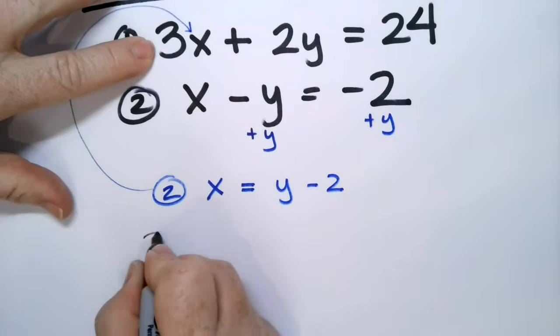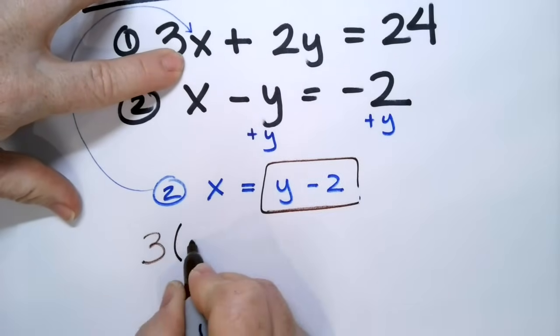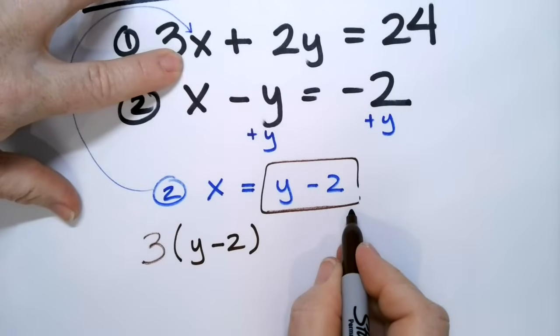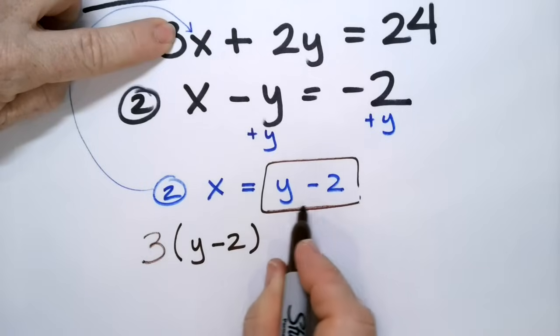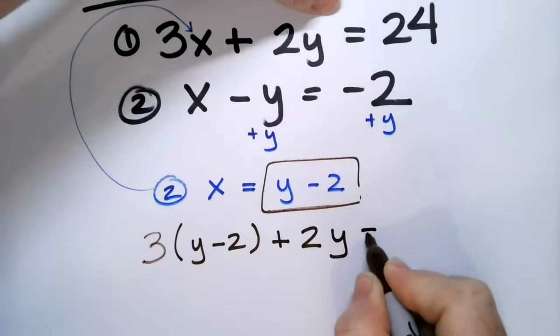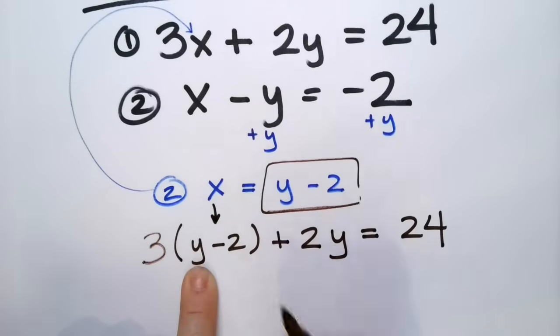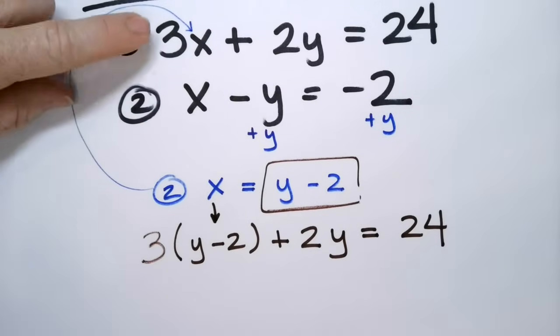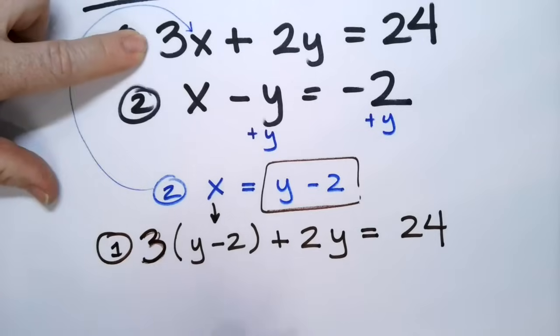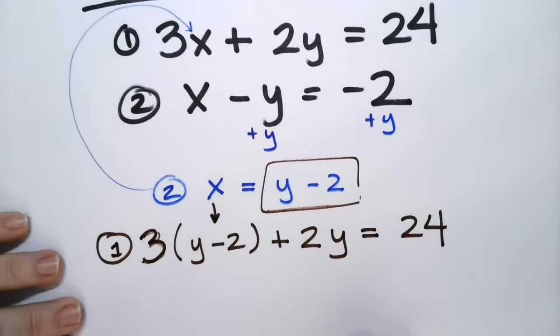So I'm going to say 3 times x. What is x? X is this thing, y minus 2. Remember, you've got to take the whole thing, not just the y. So 3 times x, x is equal to y minus 2, so put that in there. Then keep moving, plus 2y equals 24. Did you guys see how we just substituted? We put x in there. This is the equation number one. We just rewrote equation one, but we included equation number two and shoved it in.